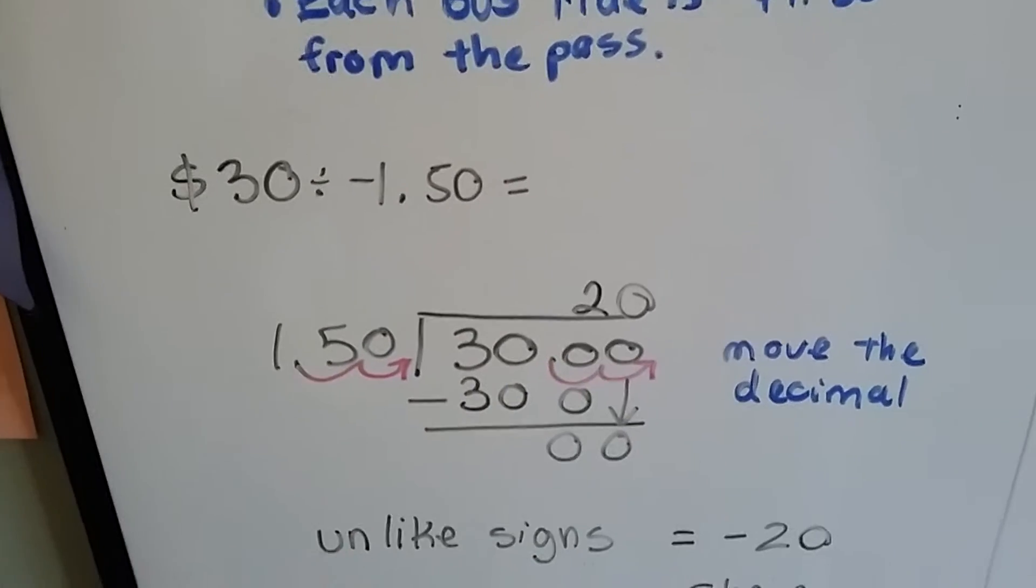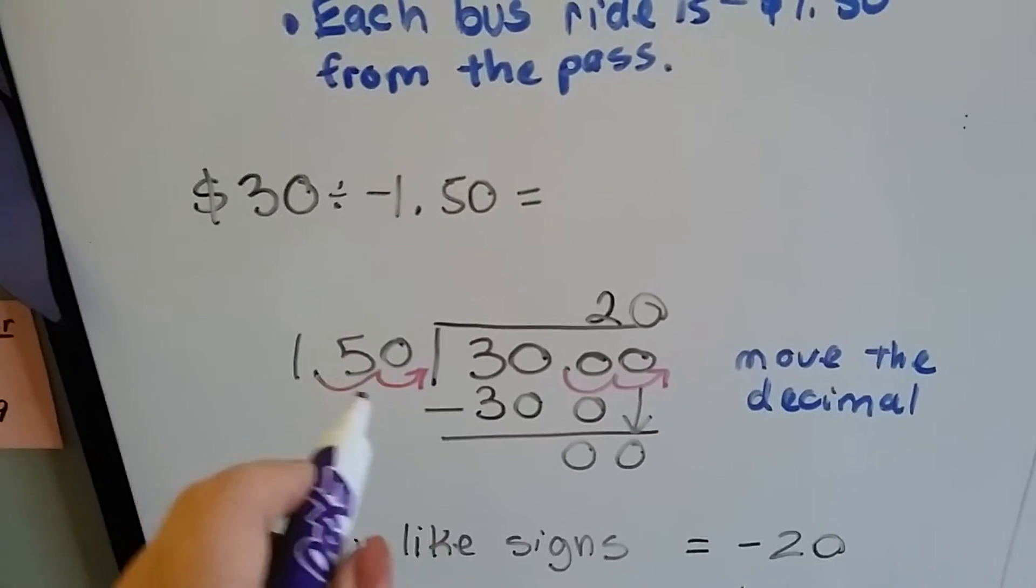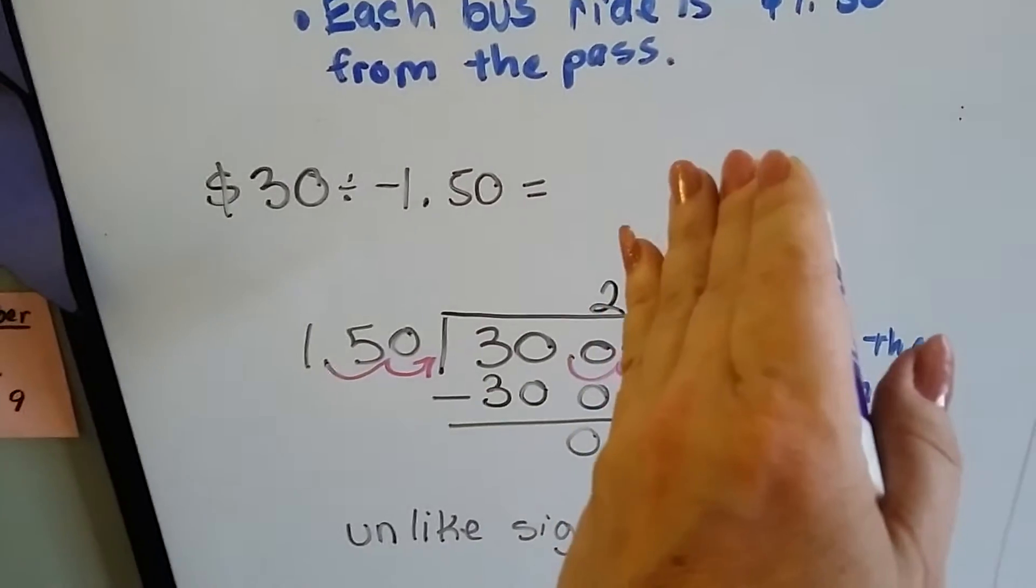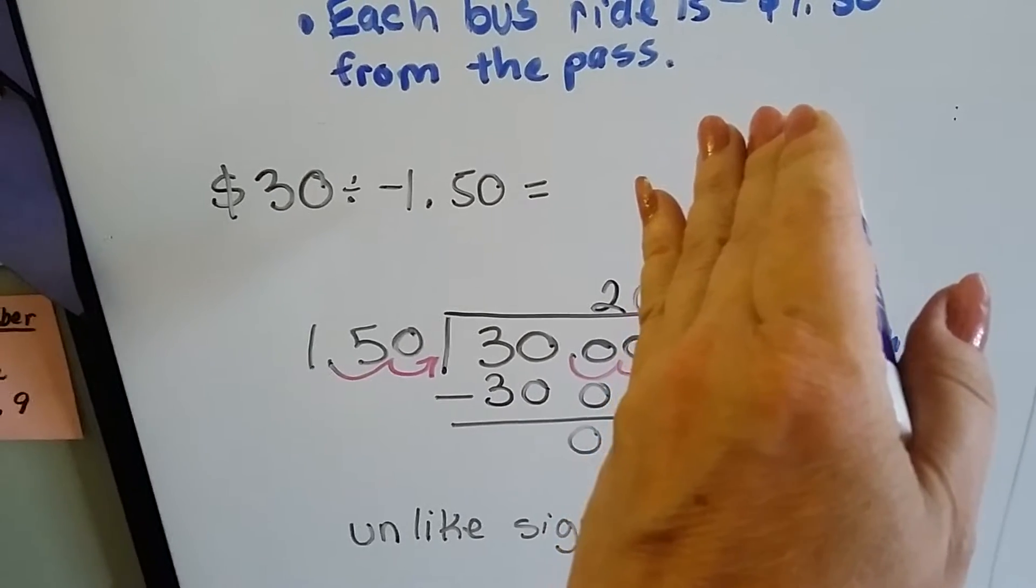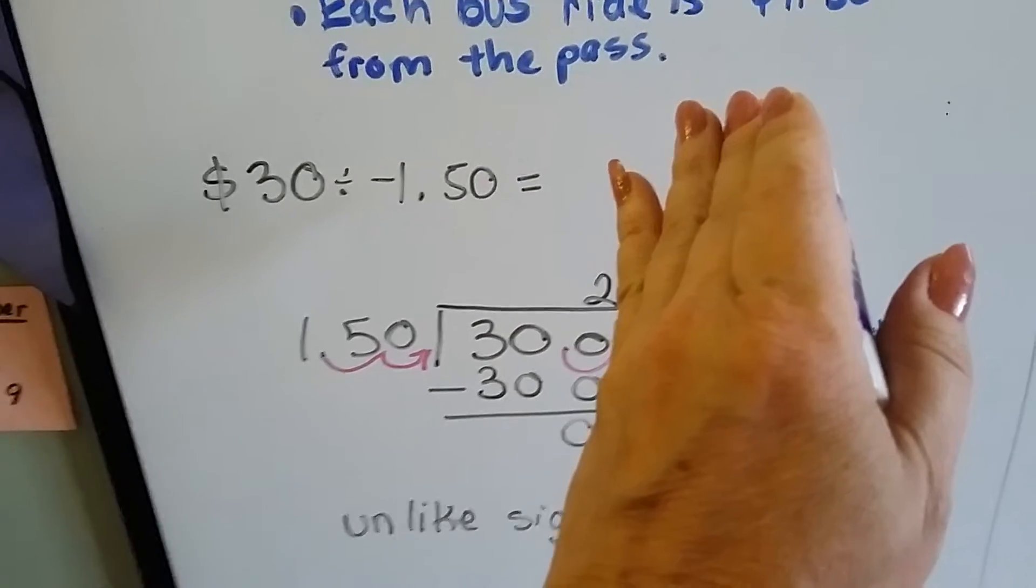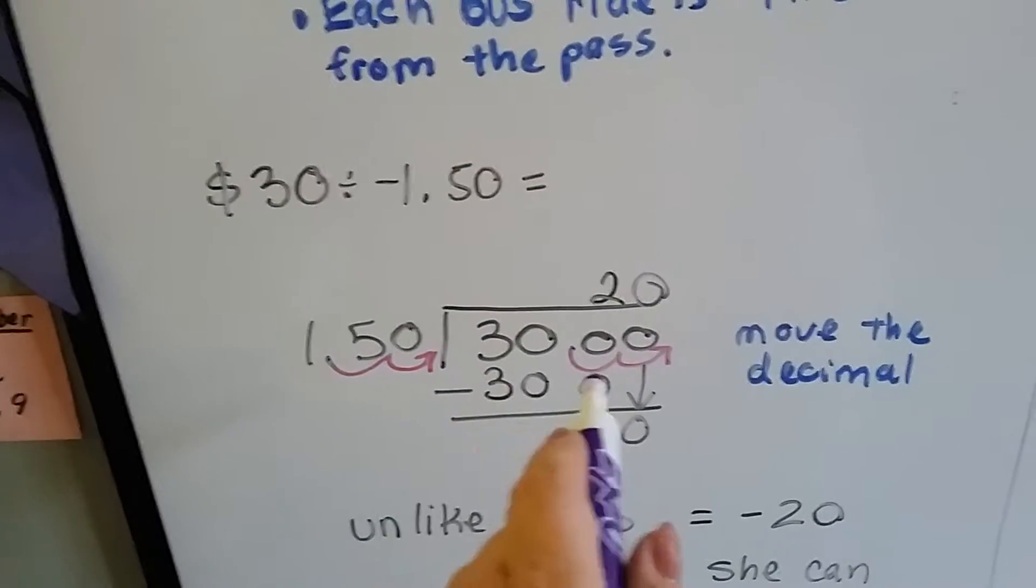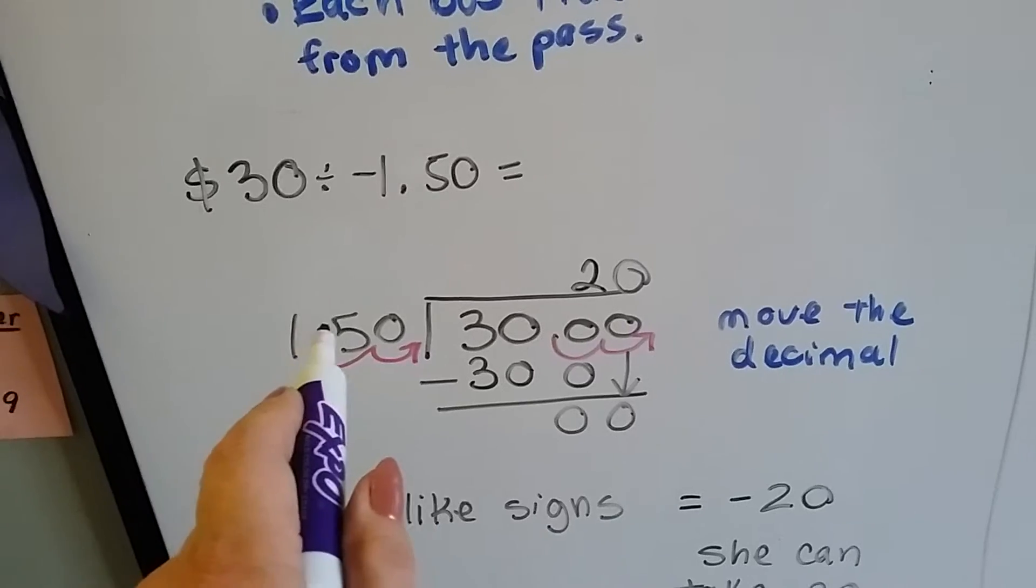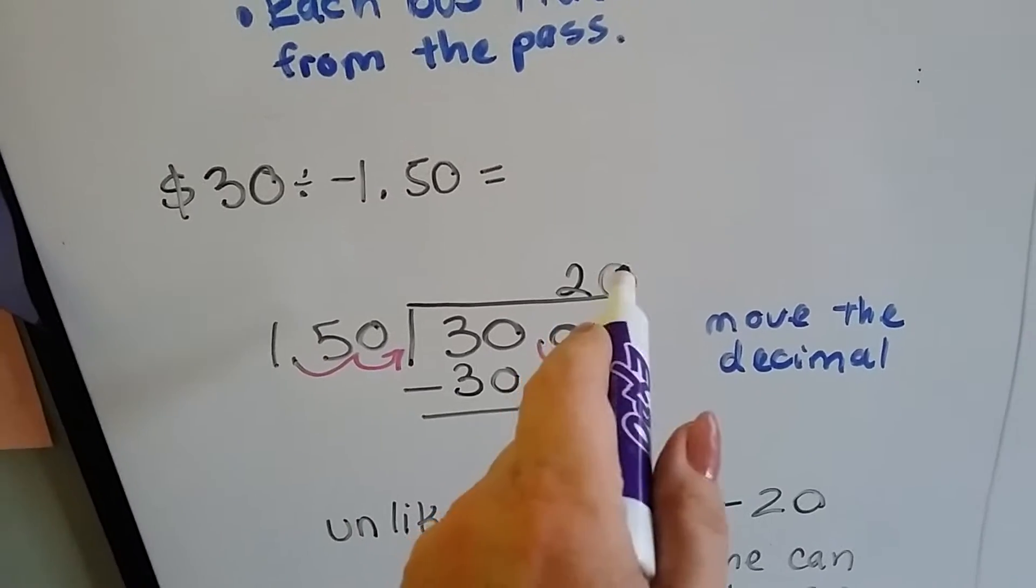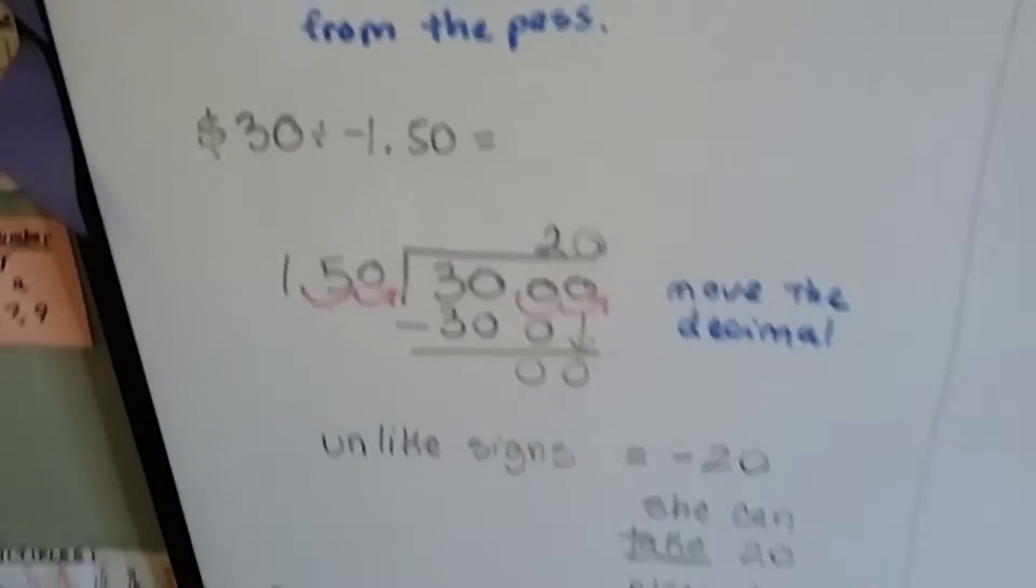Well, $1.50 and $1.50 makes $3, so I know it went in there two times. Two times 150 is 300, so I did that and I subtracted it and I got zero. Now the other zeros turn to come down. How many times can 150 fit into zero? Zero.